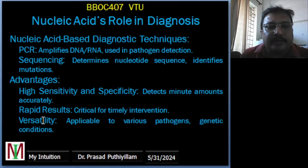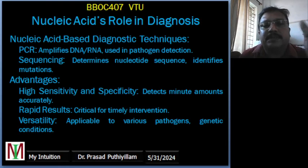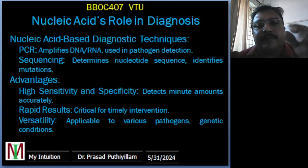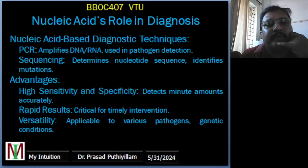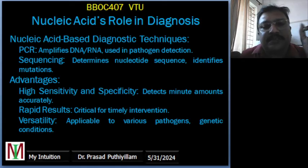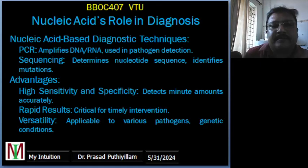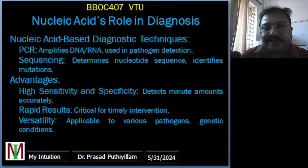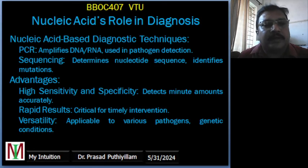The advantages of nucleic acid in diagnostic applications: they are highly sensitive and specific. They can detect very minute amounts of nucleic acid, ensuring accurate diagnosis. For example, the PCR test can detect even very low levels of SARS-CoV-2 RNA from small samples taken from the mouth and nose. Results are also very rapid, which is crucial for timely medical intervention — the rapid RT-PCR test for COVID-19 gives results within a few hours. The method is also versatile and can be used for a wide range of pathogens and genetic conditions, such as detecting HIV or influenza.